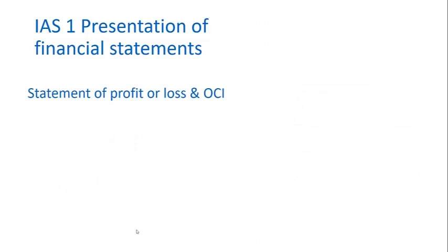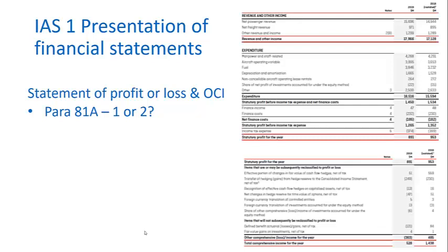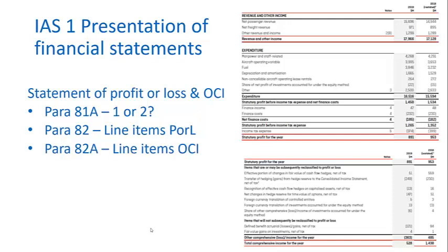Supporting the statement of financial position, we have a statement of profit or loss or other comprehensive income. There is flexibility: paragraph 81A allows the firm to present this as either one statement or two. Qantas uses a two-statement approach, presenting a statement of profit or loss first, followed by a second statement of other comprehensive income. Firms are required to disclose certain line items in both the statement of profit or loss and other comprehensive income.